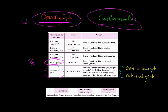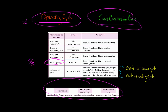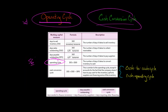So why are we subtracting days payable outstanding in the cash conversion cycle? Here's the intuition. The operating cycle says it's going to be 56 days before we get cash from the customer — we've got to sell the inventory and collect the cash. The question is: how are we going to finance the inventory during those 56 days? Days payable outstanding can be thought of as financing provided by suppliers.